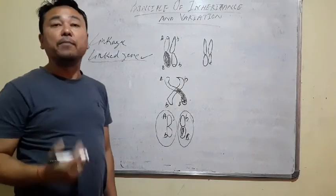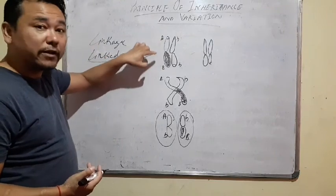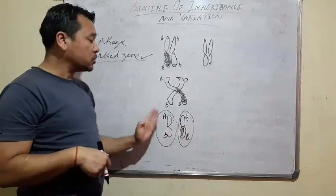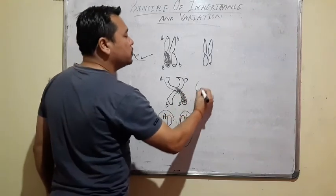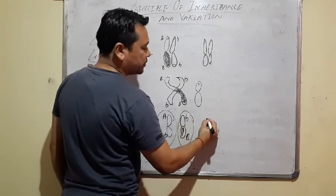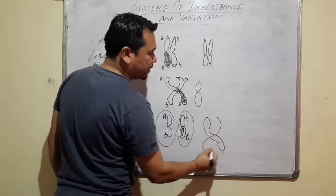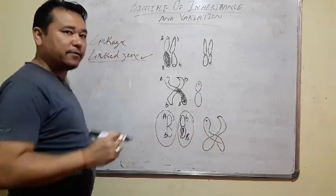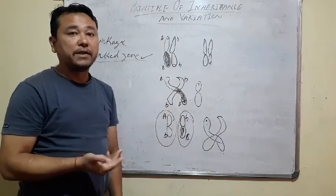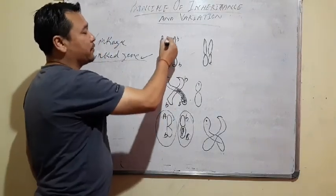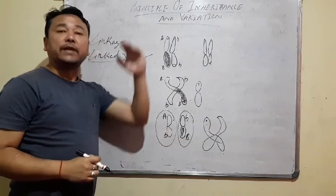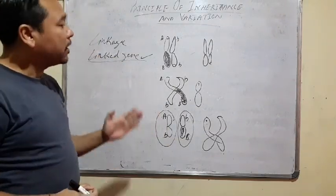In cases where genes are located far from each other, during crossing over, the recombinant type will be more. If the genes are located close to each other, they will inherit together. There is no chance of recombination. But if the genes are located far from each other, during or after crossing over, the recombinant type will be produced. This is about recombination.